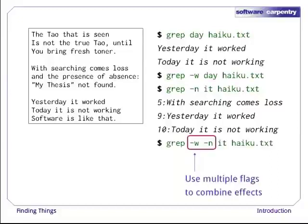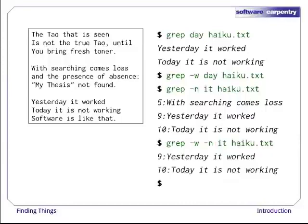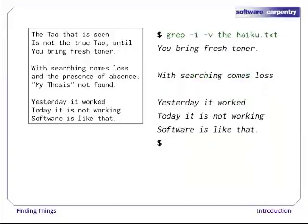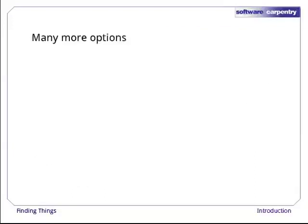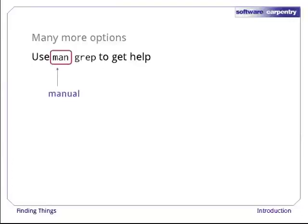As with other Unix commands, we can combine flags to get only whole word matches with line numbers. Here's another example: -i makes matching case insensitive, while -v inverts the match, so that it only prints lines that don't match the pattern. Grep has lots and lots of options. To find out what they are, we can type man grep. man is the Unix manual command — it prints a description of a command and its options, and, if you're lucky, provides a few examples of how to use it.